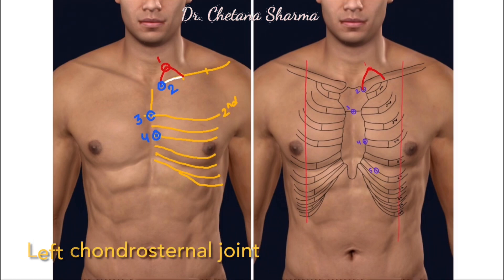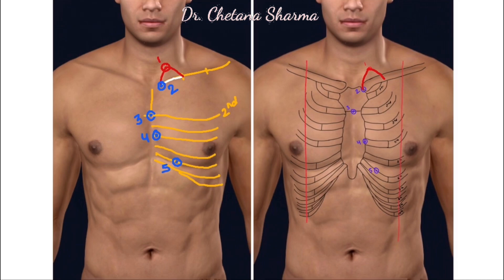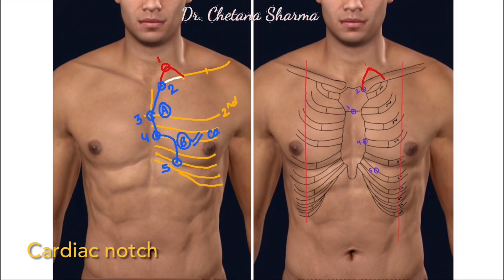That means the joint between the 4th costal cartilage and the sternum. Point number five is on the 6th costal cartilage, 2.5 cm left from the left margin of the sternum. Now connect point numbers two, three, and four with a line — mark this as line A. Connect point numbers four and five with a concave line — mark this as line B. This line represents the cardiac notch. Line A and line B together represent the anterior border of the left lung.